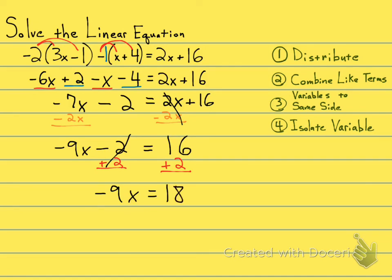One more step to get grumpy old x by himself is to divide out negative 9. Negative 9 over negative 9 is a positive 1. So we have a positive 1x. And we don't need to write that 1. It's understood. x equals negative 2.